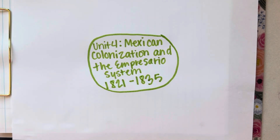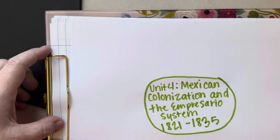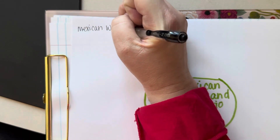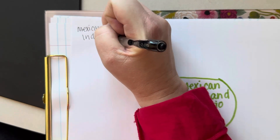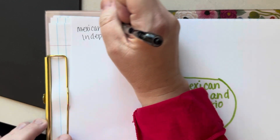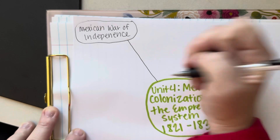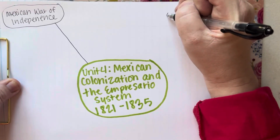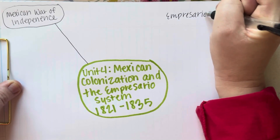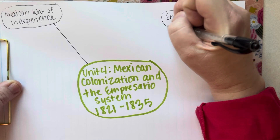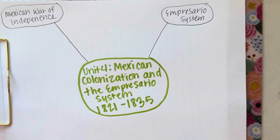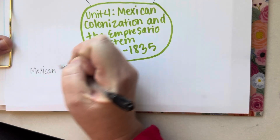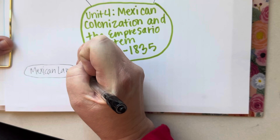There were three major things that we looked at. The first of those was the Mexican War of Independence. The next thing was the impresario system. And then the third thing that we looked at was Mexican laws that related to early settlement of Texas.